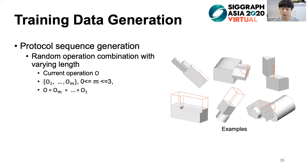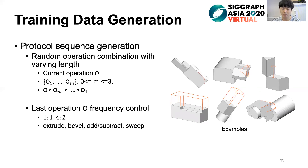For protocol sequence generation, we randomly combine operations with varying lengths. Suppose the current operation is O; we search for M random operations applied before O, limiting M within the range 0 to 3. There can be very complex combinations and shapes generated, as shown in the examples. To balance the complexity, the last operator O has a fixed frequency for different types — the ratio is 1:1:4:2 for extrude, bevel, add/subtract, and sweep — chosen to account for different complexity levels.